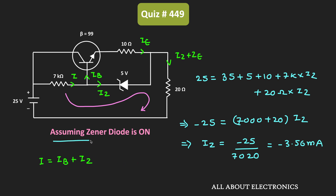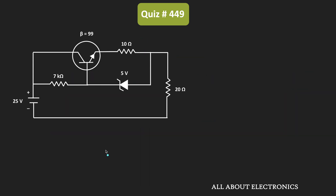Under this assumption, we are getting a negative value for the Zener current. But if the Zener diode is in the ON condition, the current through the Zener diode should flow in the forward direction. Since we get a negative current, our assumption is not correct. Therefore, we can say that this Zener diode is in the OFF condition, and it acts as an open circuit. This makes the circuit analysis much simpler.